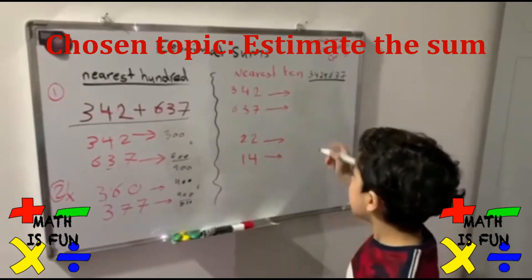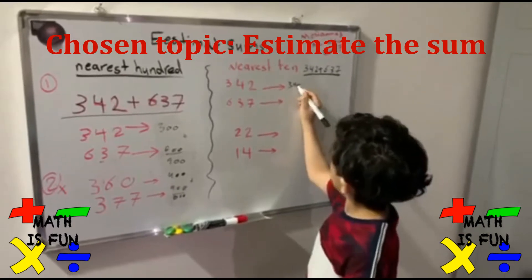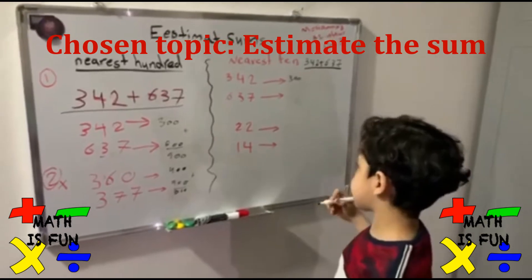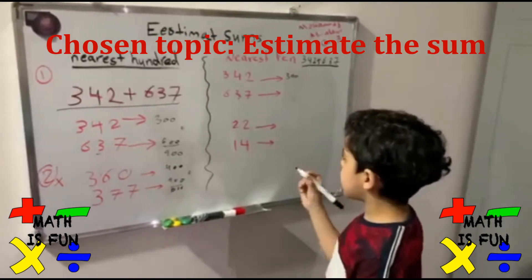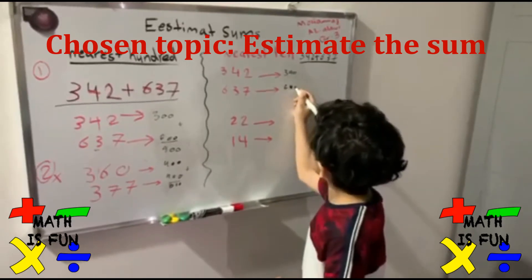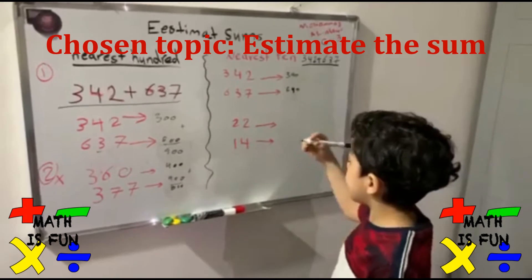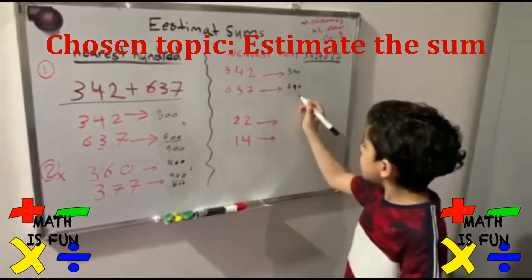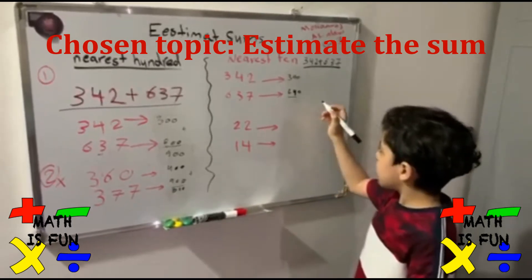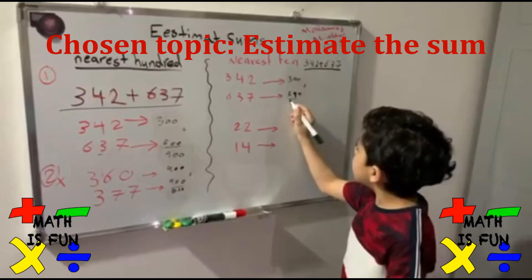Now for the nearest 10: 342 is going to be 340. Why? Because the 2 is less than 5. 637 is going to be 640. Why? Because the 7 is more than 5. I'm going to add 340 plus 640, which is going to be 980.